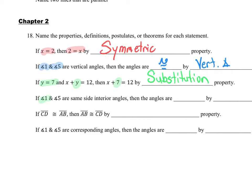If angle 1 and angle 5 are same-side interior angles — do you guys remember this? Same-side interior angles, S-S-I-A, that's the acronym. What do you remember about same-side interior angles? They're either congruent or supplementary — those are the two things we learned about these angle relationships when we had parallel lines.